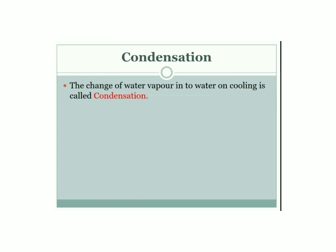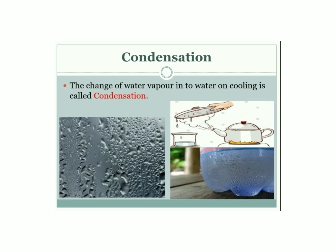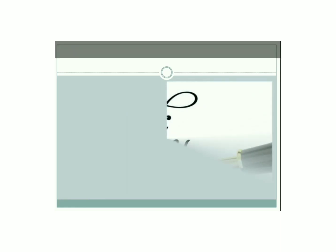The next process is condensation. The change of water vapor into water on cooling is called condensation. To learn more about condensation, let us perform an activity. Take out a chilled water bottle from the refrigerator and keep it on the table for some time. What will you observe? When water vapor in the air comes in contact with the outer side of the cold bottle, it cools down and forms tiny droplets. So the change of water vapor to water on cooling is called condensation. Thank you, have a nice day children.